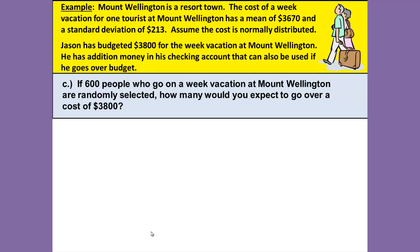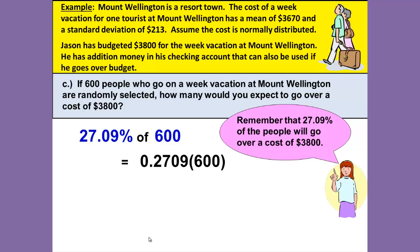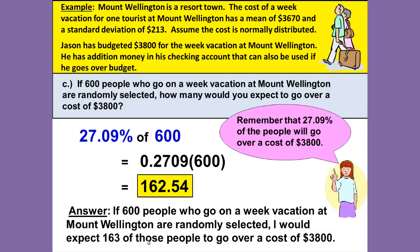Part C asks: if 600 randomly selected people who go on a week vacation at Mount Wellington are randomly selected, how many would you expect to go over the cost of $3,800? Remember that 27.09% of the people will go over a cost of $3,800. So we take 27.09% of 600 — that means we multiply 0.2709 times 600, which gives us 162.54. So I would expect approximately 163 of those people to go over a cost of $3,800.